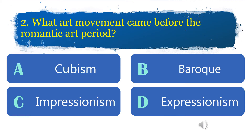Number 2: What art movement came before the Romantic art period? A. Cubism. B. Baroque. C. Impressionism. D. Expressionism. If your answer is B, correct.